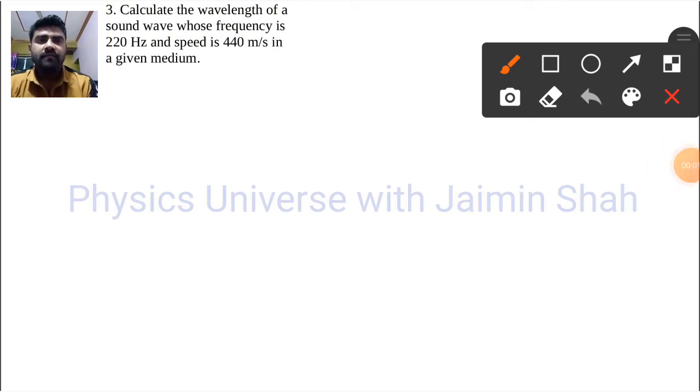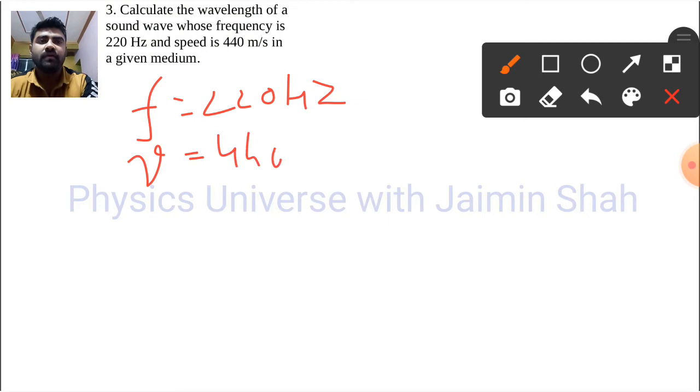Now the question is calculate the wavelength of a sound wave whose frequency, so frequency is given, f, right, so f is equal to 220 hertz and speed that is also given 440 meter per second.